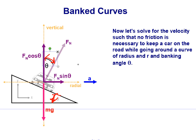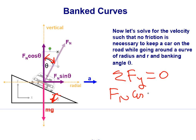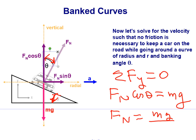Fn sine theta is in fact the centripetal force. Since there's no motion in the y direction, all the forces in the y direction have to add up to zero. There are only two forces in the y direction: the y component of the normal force, and that has to equal the weight. This tells us that the normal force is equal to the weight divided by cosine of theta.